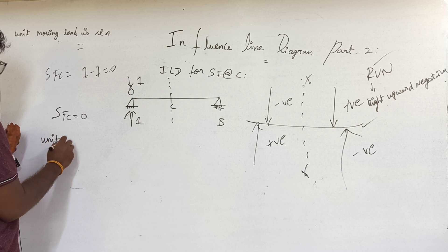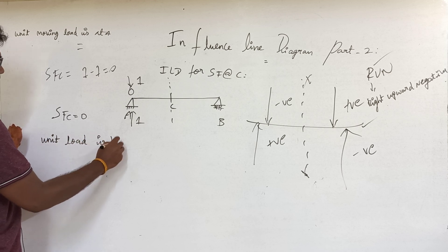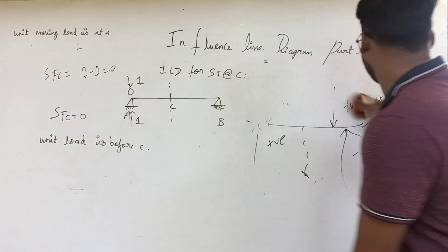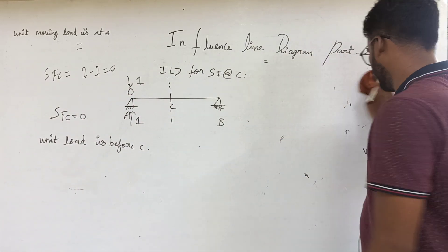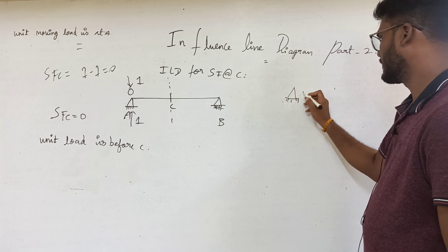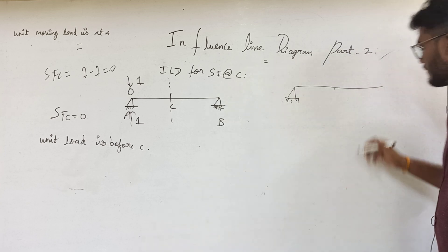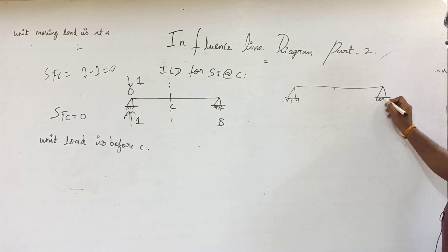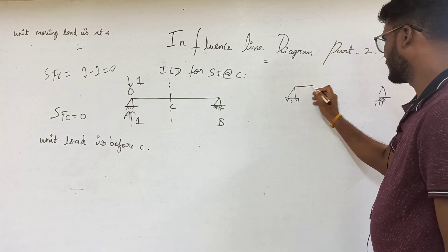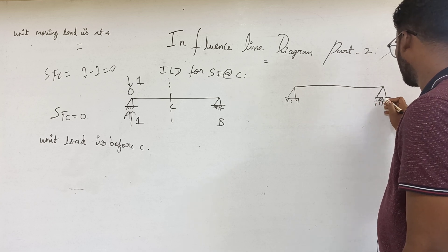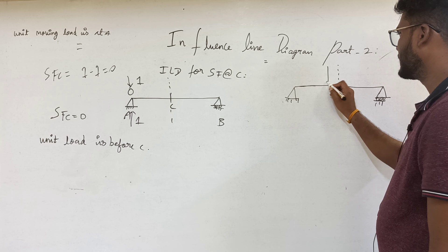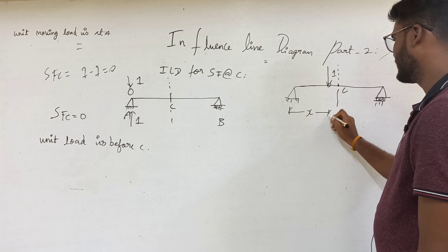Now the unit load is somewhere before C. I am going to place the unit load before C. Let this distance be x, and the remaining span is L minus x, so the total length is L.